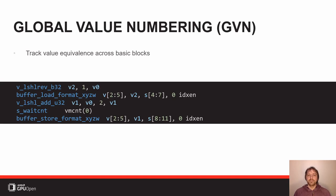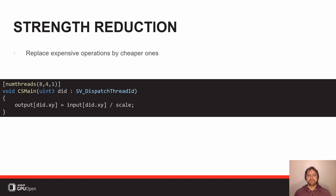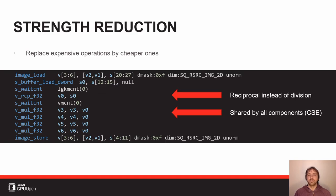So that was global value numbering. More generally, strength reduction is the idea that when you have an expensive operation in your program, you replace it by a cheaper one. In this example, divisions are expensive and we generally replace them by reciprocal and multiply. Where we divide a four-component vector by a constant scalar, we end up with a single reciprocal operation and four multiplies — the multiplies are full-rate instructions and cheap, so that's a good optimization.